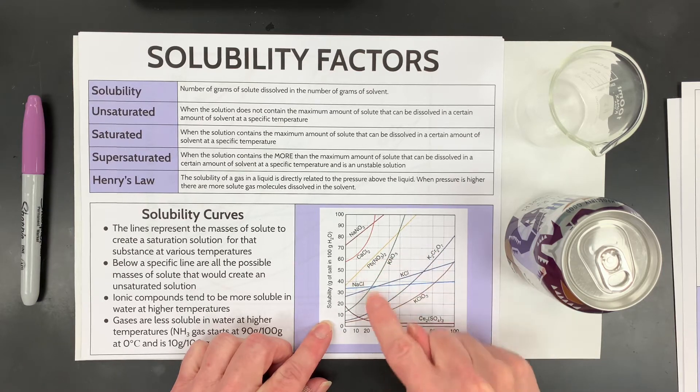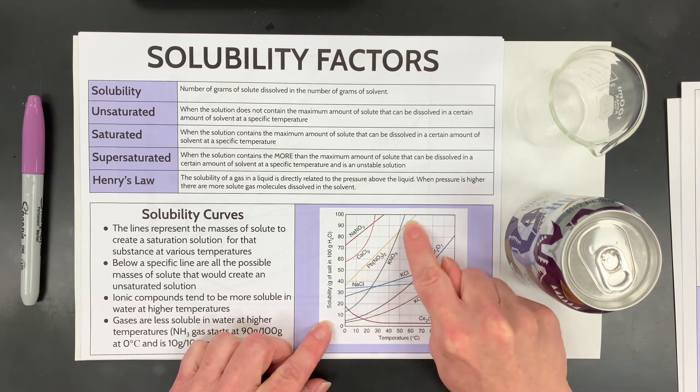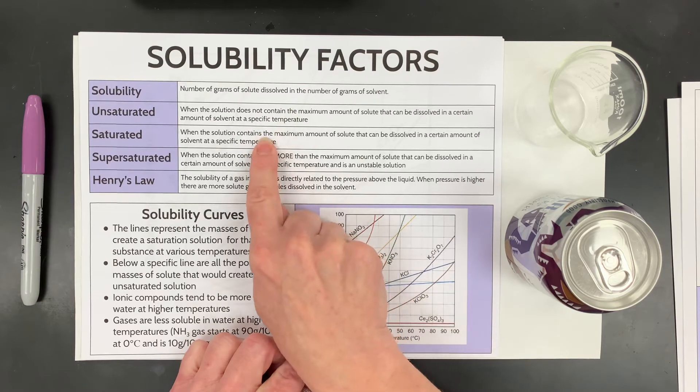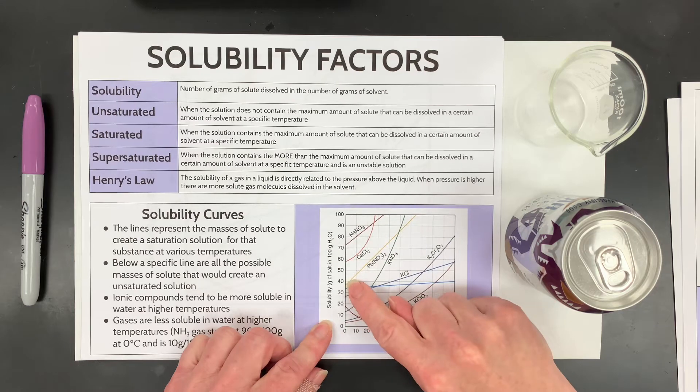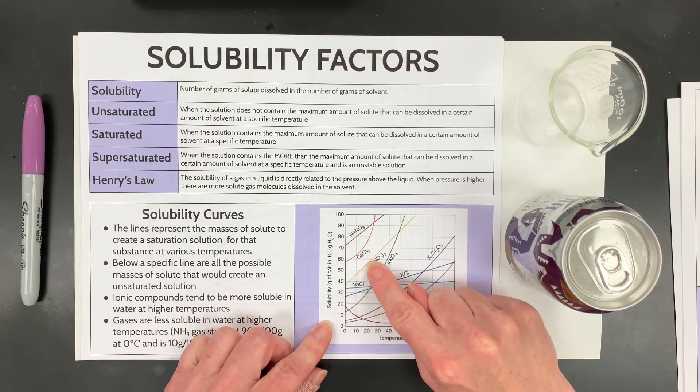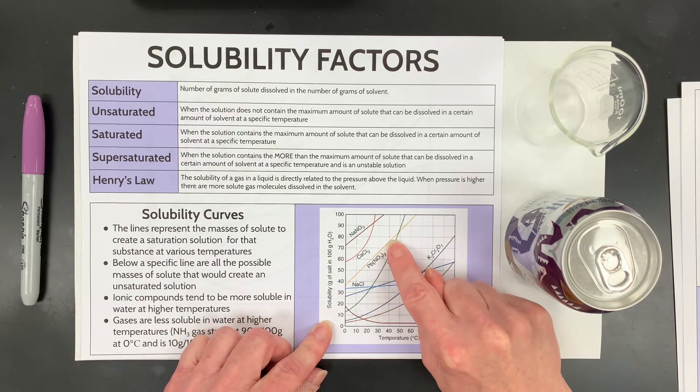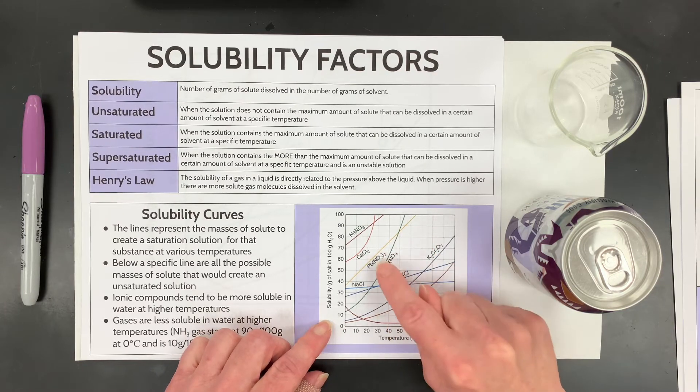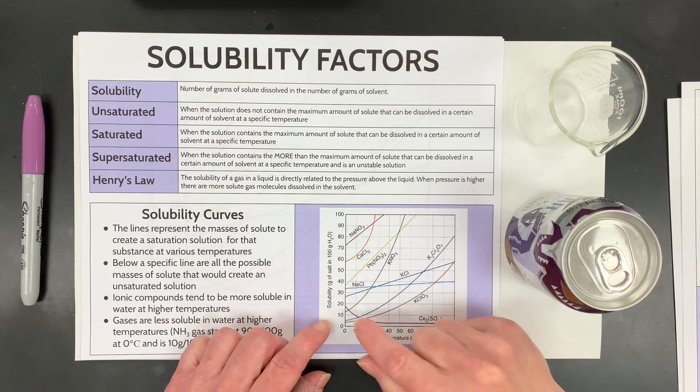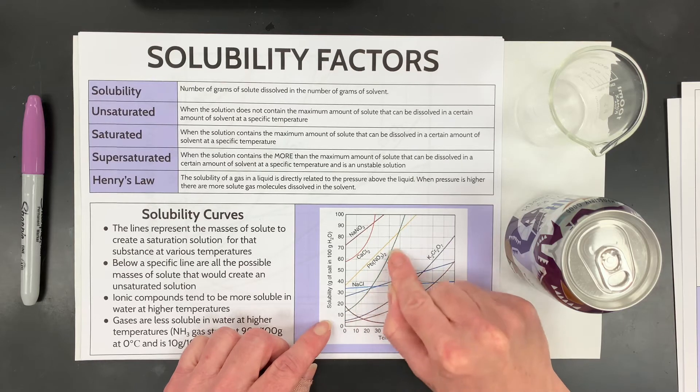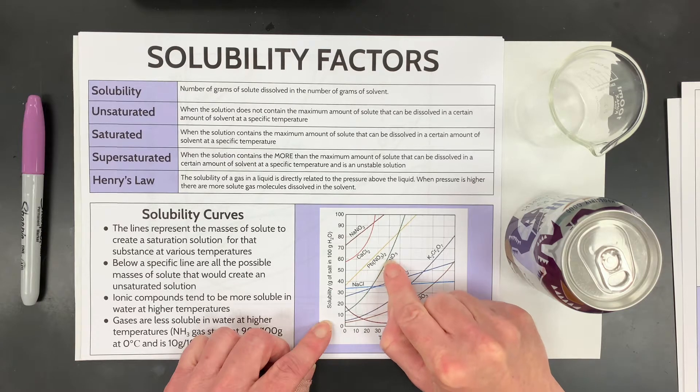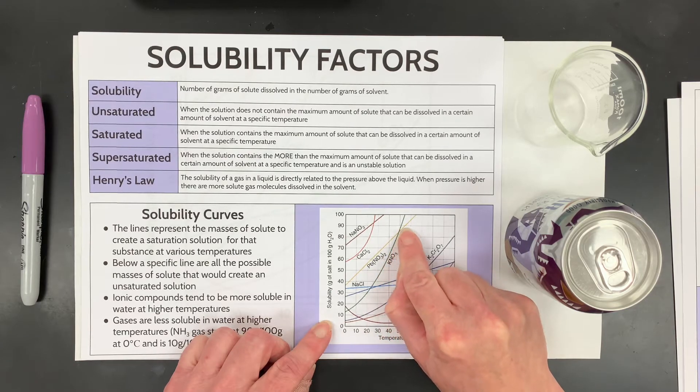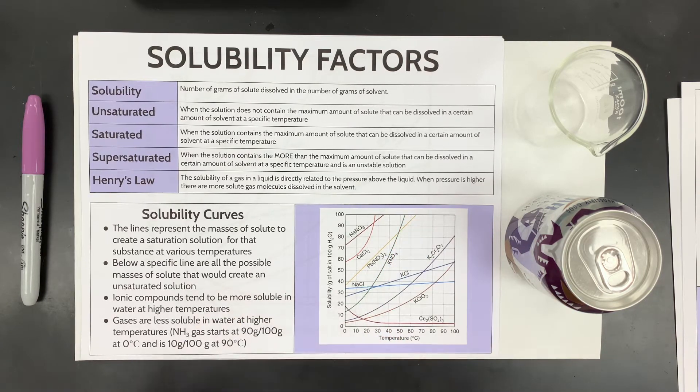So if you focus on lead nitrate, if you have any numbers below it, below this line, that's unsaturated. Saturated is the maximum amount we can put at a specific temperature in that solvent that we have. So right on this line at different temperatures, this line is the maximum amount of solute I can dissolve at a specific temperature for lead nitrate. You'll notice though if I have potassium nitrate, it's completely different.